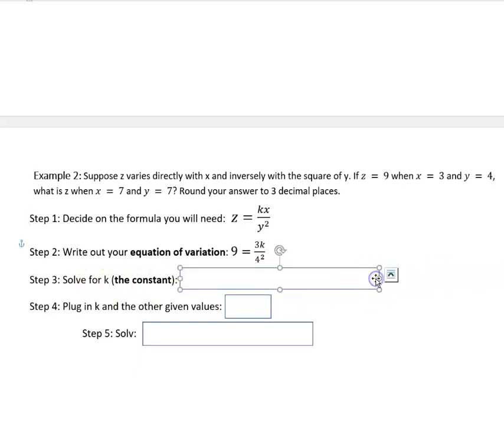And all those numbers are given except for k. So you can come down and solve k, that constant of proportionality. And you get 9 equals 3k over 16. 4 squared is 16. Take 16 times 9. That gives you 144. Divide both sides by 3 here, and that gives you 48. So our constant of variation is 48.